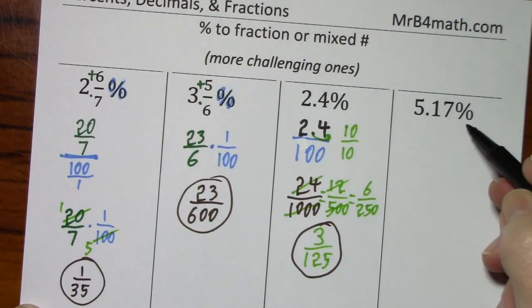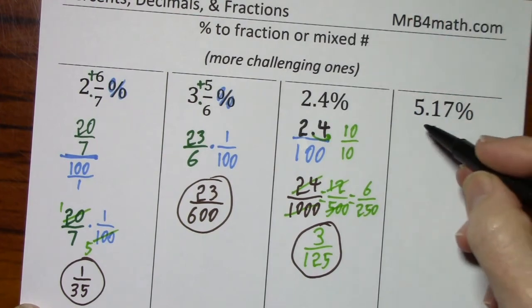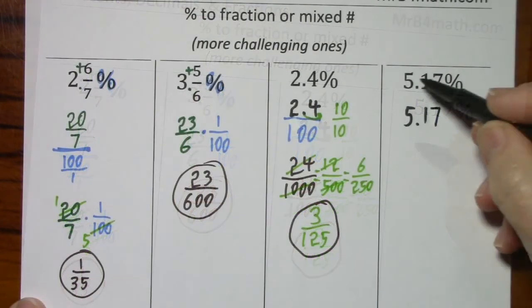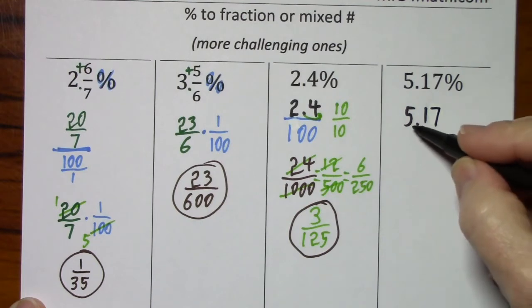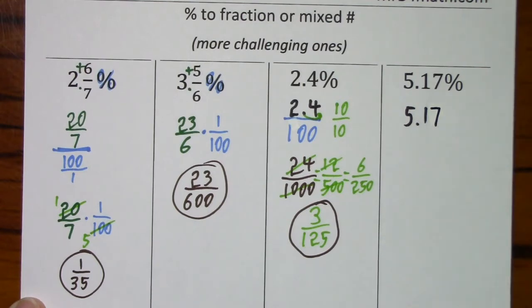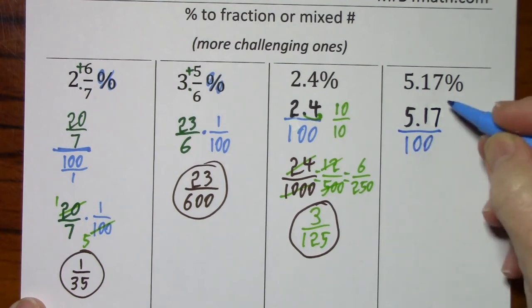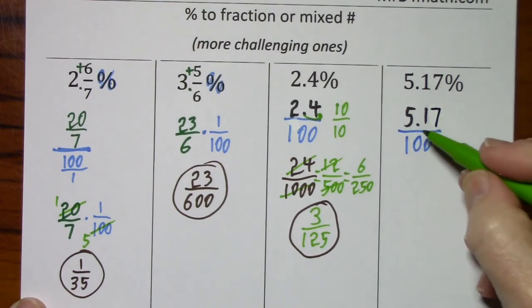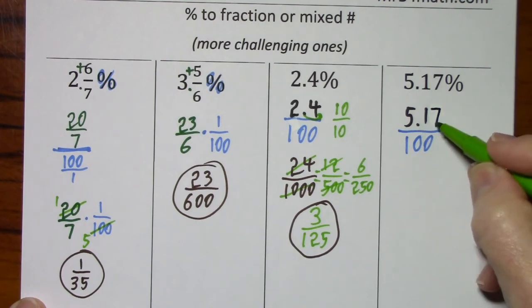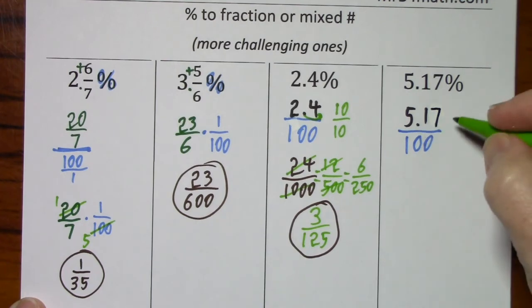And looking at our last one, they want us to write this as a fraction or a mixed number. So this percentage is the same as 5 and 17 hundredths over 100. I know that's strange. I need to get this decimal out from the numerator. I need to move it two places, so I'll say times 100.